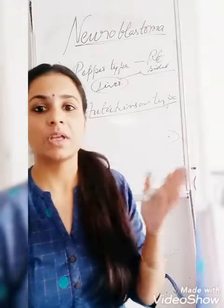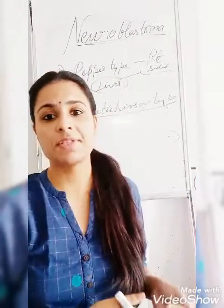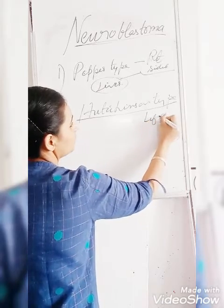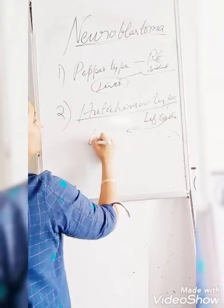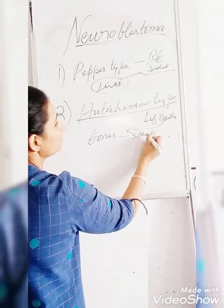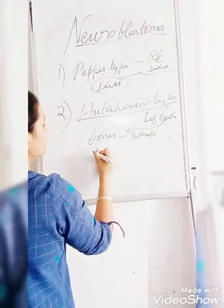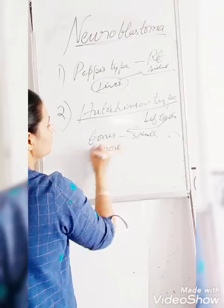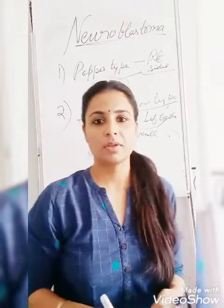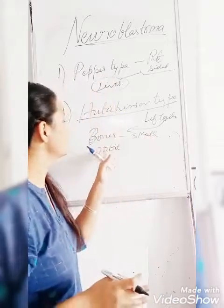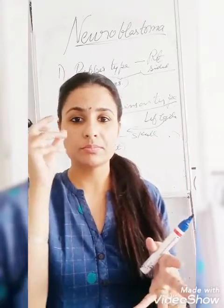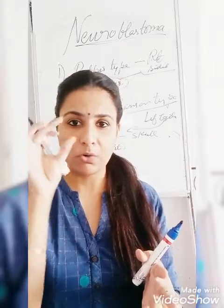In Hutchinson's type, this occurs in the left side of the adrenal medulla. The secondaries are in the bones — especially the skull — and in the orbit. The secondaries will be in the bones and orbit, and there will be ecchymosis in the retroorbital region.